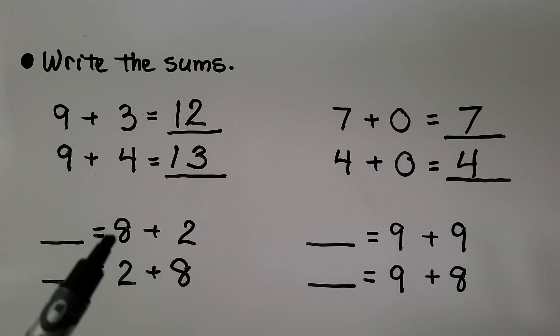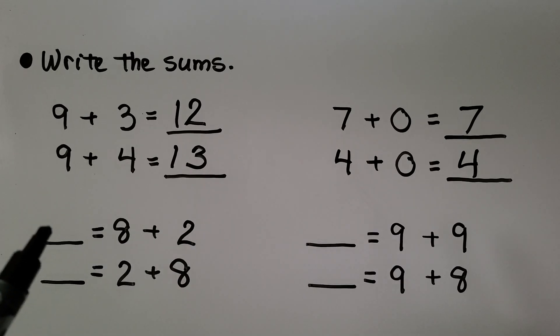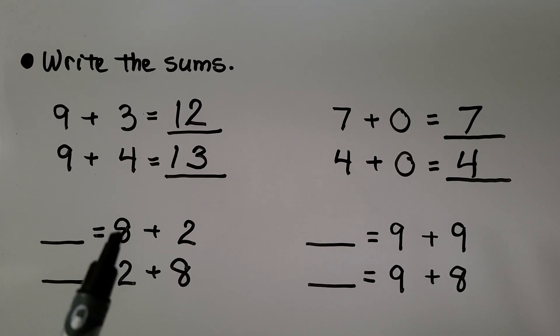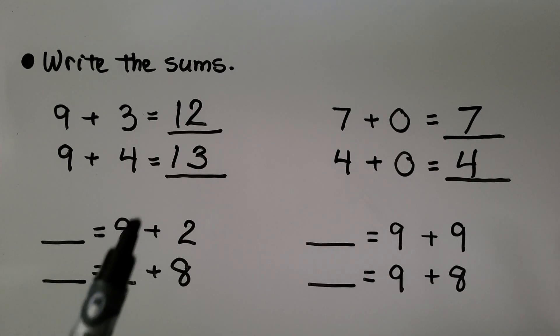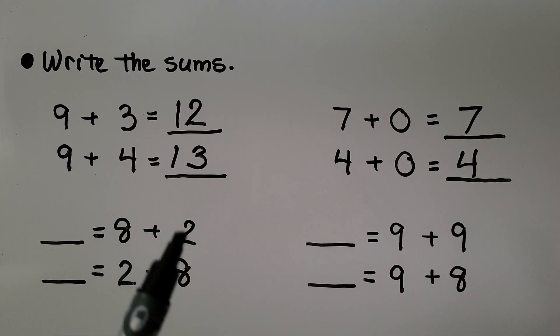Here we have 8 plus 2. We need to write the sum here in this space. We start with the greater addend 8, and we count on 2. 8, 9, 10.